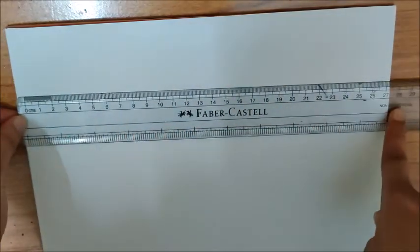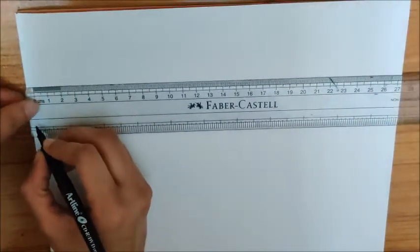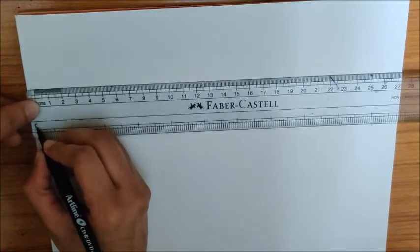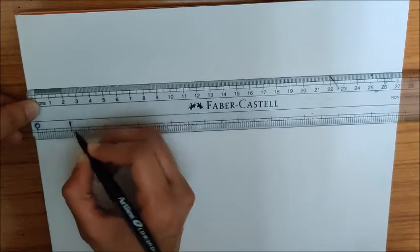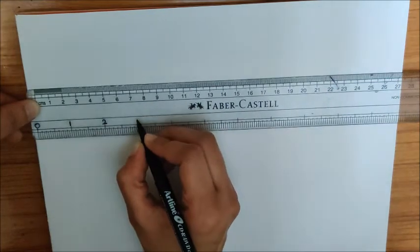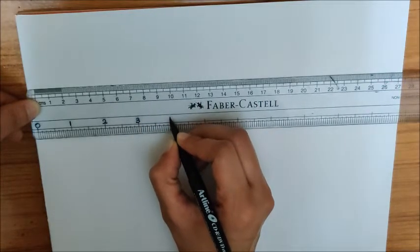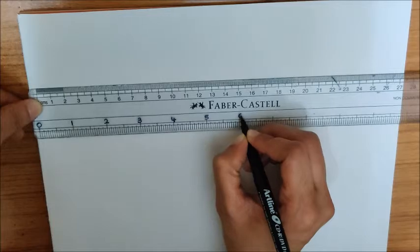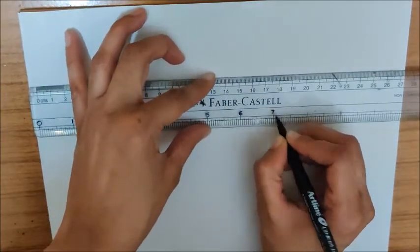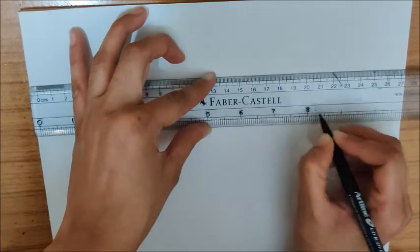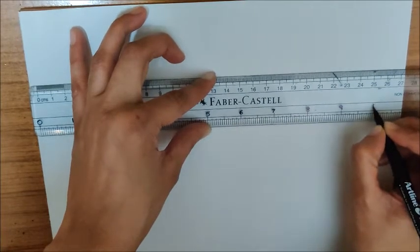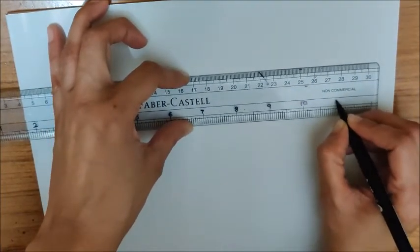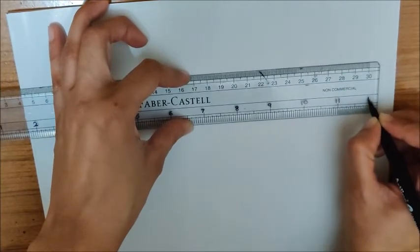But don't worry children, we will write numbers here. With marker, I am going to write numbers. So here, can you see this first big line? Just on top of it, I am going to write 0. Now here, I will write 1, 2, 3, 4, 5, 6, 7, 8, 9, 10, 11. And here, the last number, 12.